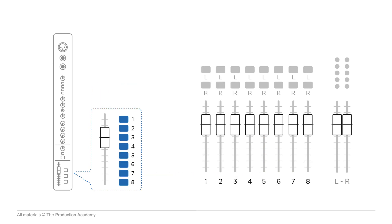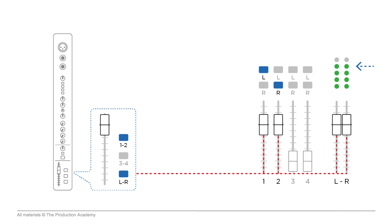Large format analog consoles could have 8 or even 16 groups, and we could, for example, assign a channel directly to one group, then assign that to both channels of the main mix. Or the signal could be sent through the group and also be assigned to the left-right on the channel — this is called double bussing and will actually increase the level of that channel in the mix. Nothing is necessarily wrong with doing this, just make sure you're aware of everywhere it's being routed.